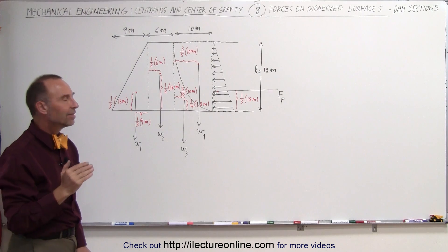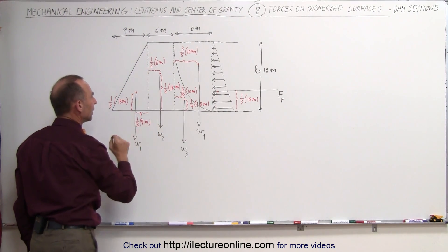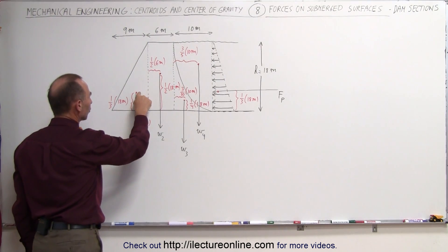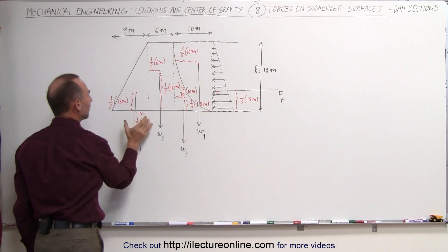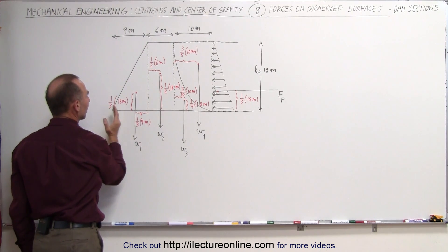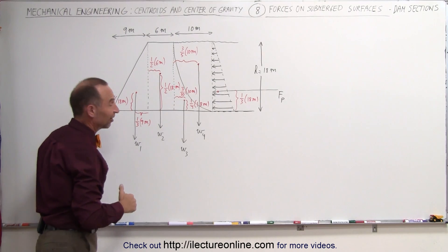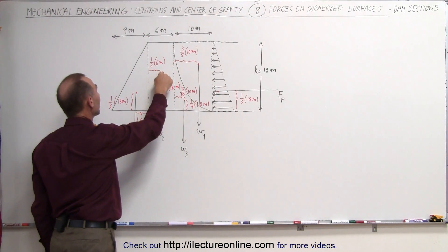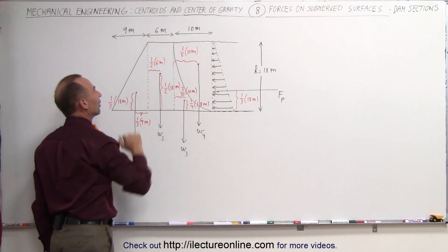We want to find the distance from the beginning of the dam to where these forces are acting — that's why we need to find the centroids. The centroid of the triangular portion is one-third the distance from bottom to top vertically, and one-third the distance horizontally. The centroid of the rectangular portion is easy to find — it's right in the middle, halfway in each direction.